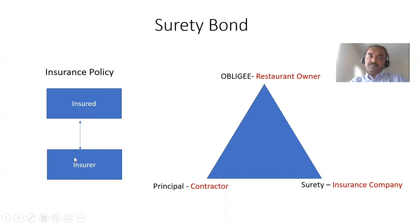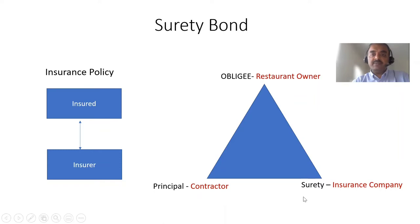It can be State Farm or Farmer's Insurance. Whereas when you talk about surety bond, there are three parties involved in the contract. Let's see why. If you see this diagram on the right side, we have a role called obligee, a role called principal, and a role called surety. Let's explain what these three concepts are by taking an example.